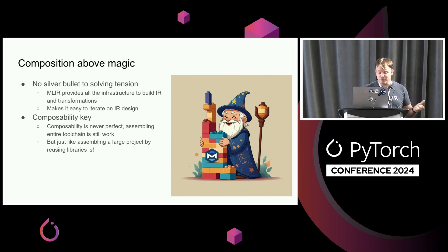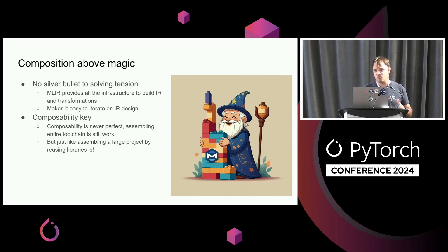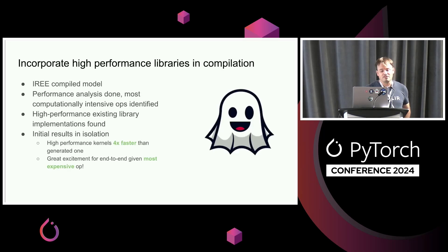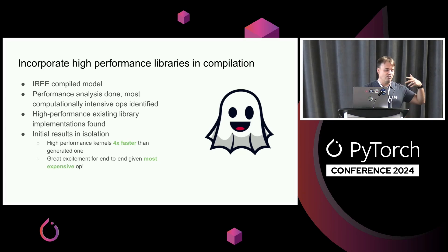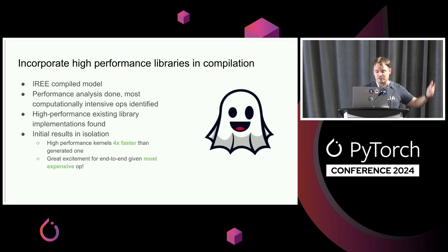Composability is never perfect. Assembling entire toolchains still requires work, and there's a lot of design that goes into these deep learning compilers to get good performance and ensure a predictable loading path. I'm going to give a couple of examples of where we and others have incorporated some of these ideas, mixing kernels and compilers to try and get better performance — things that worked and didn't work.